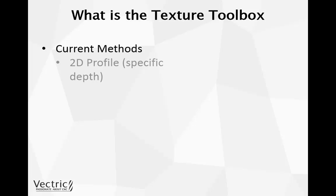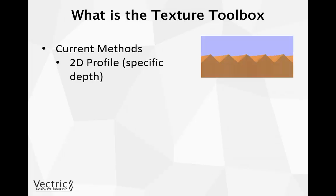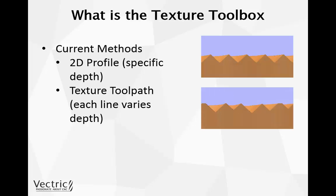So let's take a look at what is the Texture Toolbox. The current methods involve using a 2D profile toolpath, which is where we cut down to a specific depth. If you imagine that we've cut our texture and we're looking down the x-axis, you'll see that if you look at the image on the right-hand side, each line has been cut to a specific depth — that would be our 2D profile toolpath. Then we've got the option to use the Texture Toolpath as well, which is where each line is cut at a different depth, giving us a 2.5D texture.